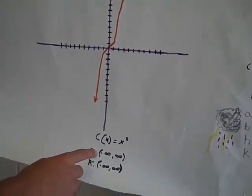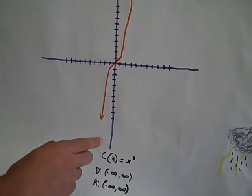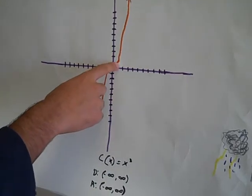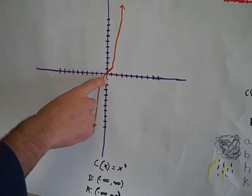Our parent function was c of x equals x cubed. Some important points would be (0, 0), (1, 1), and (-1, -1).